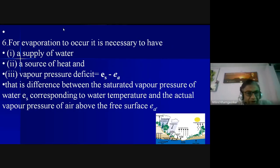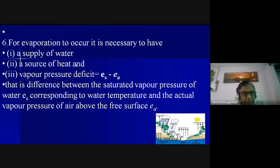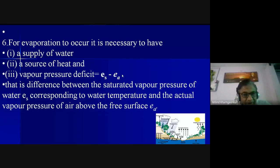What are the parameters necessary for evaporation to occur? First and foremost is the supply of water, because without water evaporation cannot take place. We also need a source of heat. Vapor pressure deficit is very important — we require that the atmospheric vapor pressure at the surface of the water body should always be less than the saturation vapor pressure.